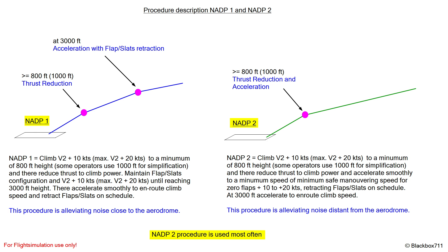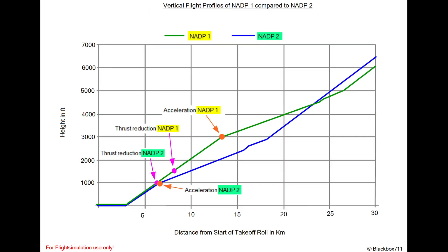Let's have a look at the vertical profiles of these two noise abatement departure procedures. The green line shows the NADP-1 procedure and the blue one the NADP-2. From this vertical profile, we can see that NADP-1 causes aircraft to gain height more quickly, so citizens closer to the airfield will have less noise pollution.